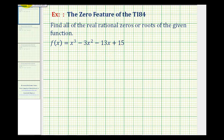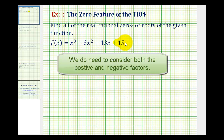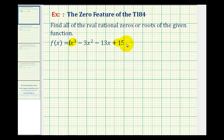Normally when asked to find the zeros of a polynomial function, we start by listing all the possible rational zeros of the function. The list of possible rational zeros comes from the ratio of the factors of the constant term — in this case positive 15 — to the factors of the leading coefficient, which in this case would just be one. So before we take a look at the calculator, let's make a list of all the possible rational zeros, and then we'll find them graphically.